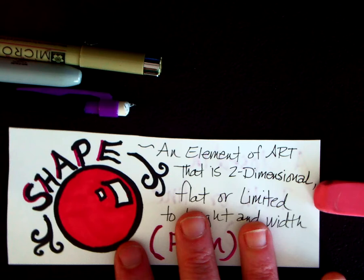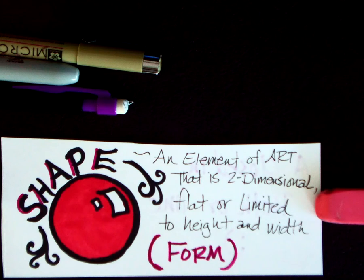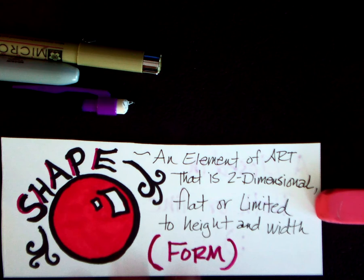Hi guys and welcome to Art Starters. Today we're going to work on the second element of art, and this is shape. A very fast definition of shape is an element of art that's two-dimensional. It's flat or limited to height and width.